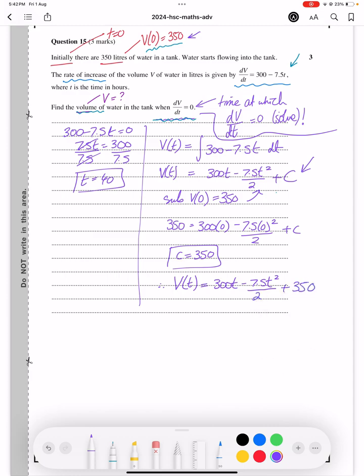We're not done yet. Our question asked for volume of water in the tank at time 40. So therefore V(40) equals 300 times 40 minus 7.5 times 40 squared over 2 plus 350.